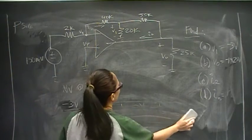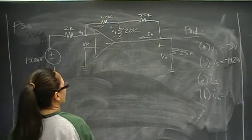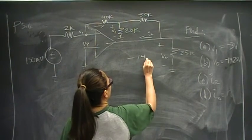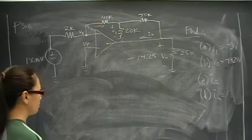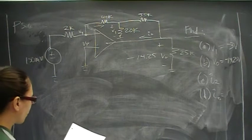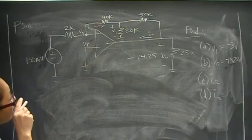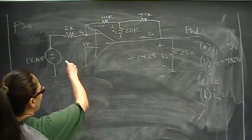So now we know what Vout is, negative 14.25. It means we can solve for I2 and I0, so let's do I2 first.